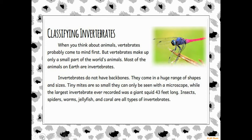Vertebrates probably come to mind first when you think about animals, but vertebrates make up only a small part of the world's animals. Most of the animals on earth are invertebrates — they do not have backbones. They come in a huge range of shapes and sizes. Tiny mites are so small they can only be seen with a microscope, while the largest invertebrate ever recorded was a giant squid that was 43 feet long. Insects, spiders, worms, jellyfish, and coral are all types of invertebrates.